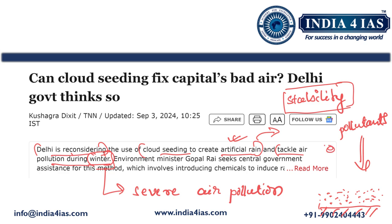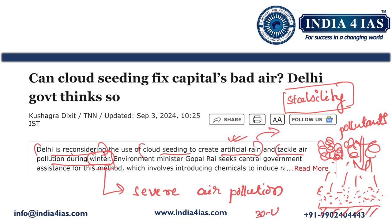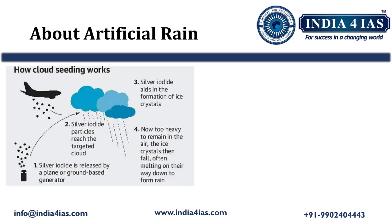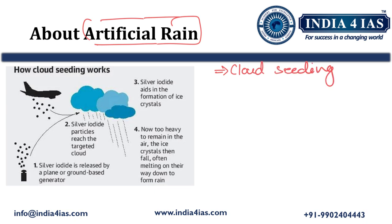The government is considering creating artificial cloud seeding techniques and artificial rain. Because of this artificial rain, whatever dust particles and pollution is there, it will be carried away. If not 100%, at least around 30 to 40% of the air pollution may be reduced. Artificial rain is commonly referred to as cloud seeding — a weather modification technique that aims to enhance precipitation from the clouds.